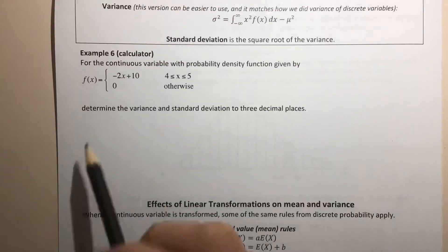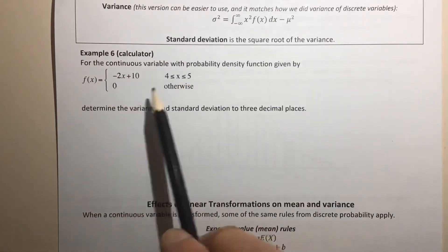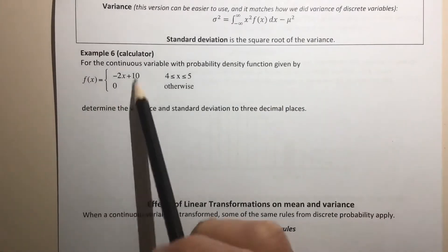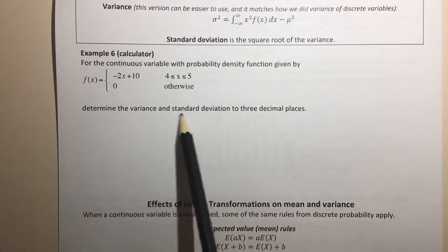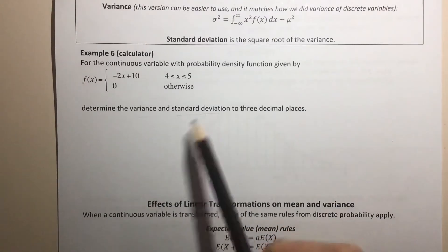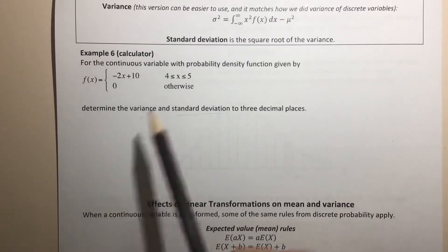So let's check this out and see how it works. We've got a continuous variable with a probability density function given by... got our function here, and we have to determine the variance and the standard deviation to three decimal places. We're going to find the variance first, and then square root that to get the standard deviation.